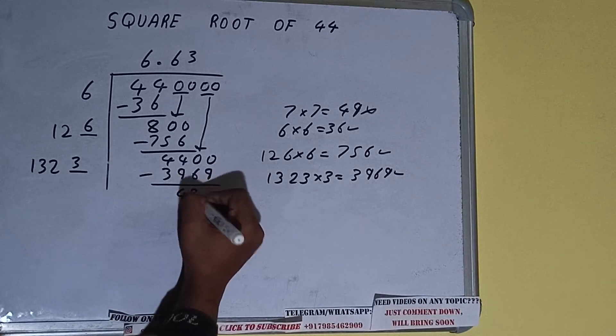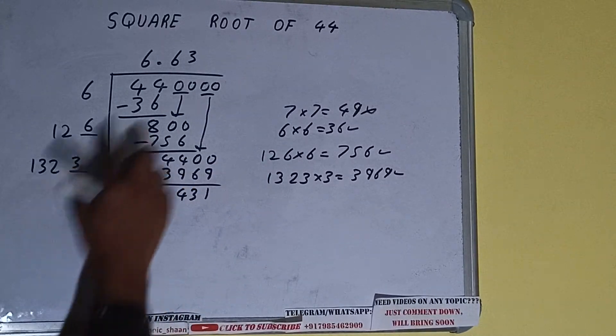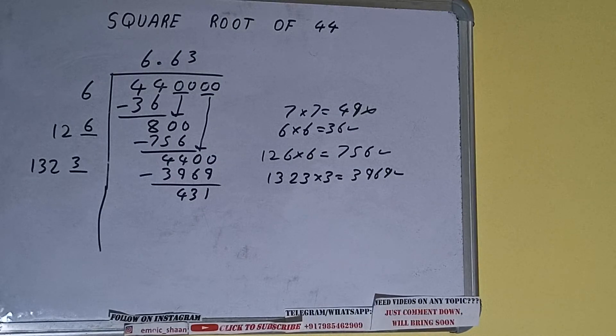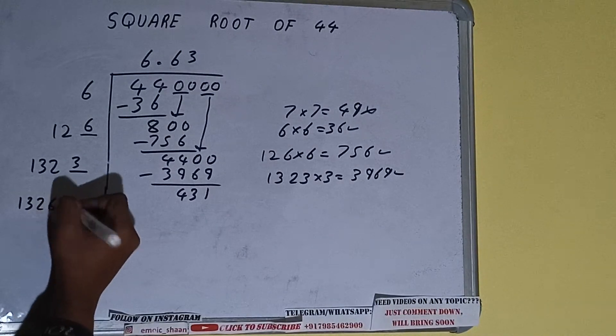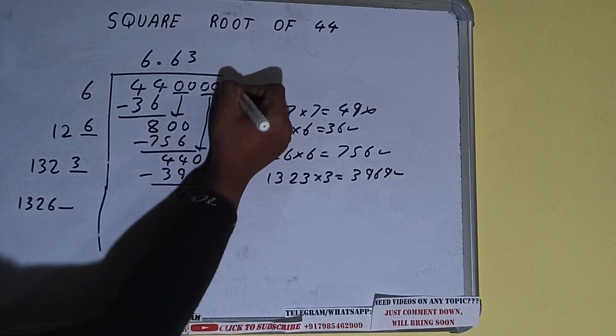And 431 will be left. Now 1323 into 3 we did, so add both. So 1323 plus 3 will be 1326, and one digit extra. And this number we need to make it big, so bring the next pair of zeros down and it will be 43100.